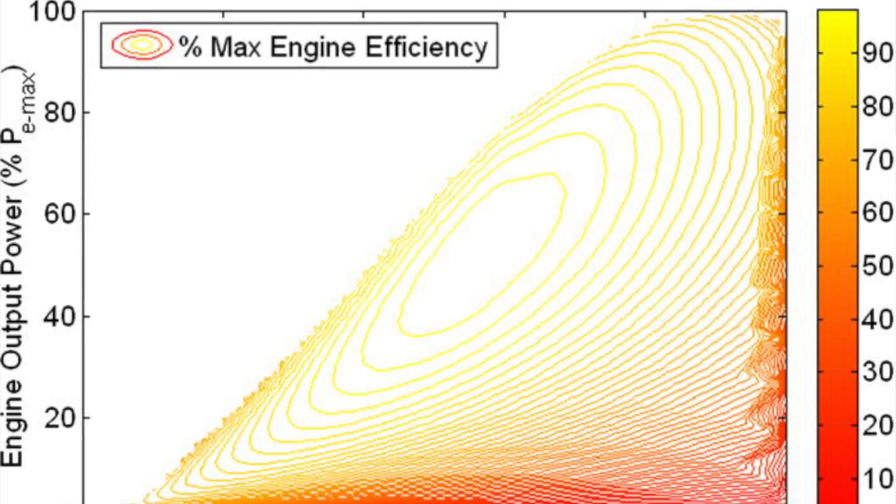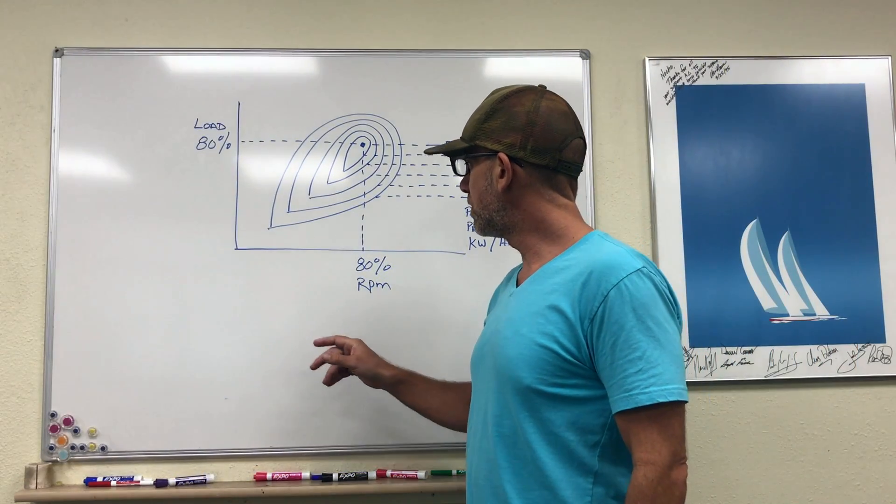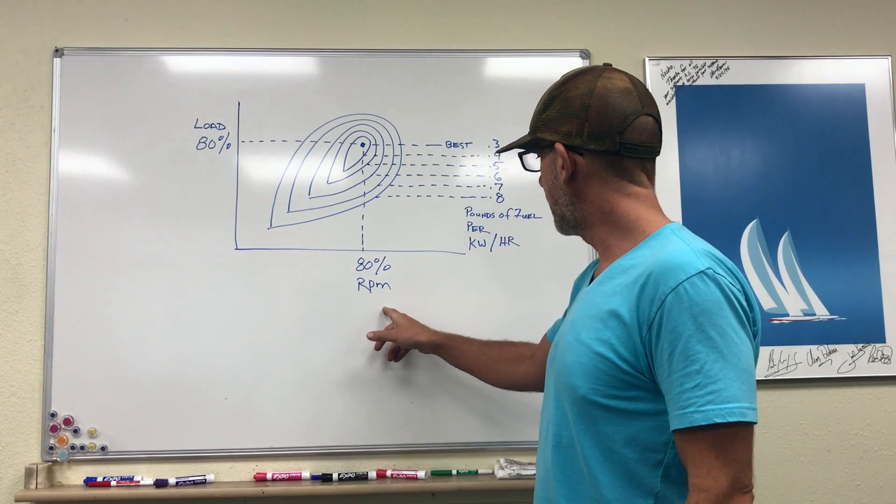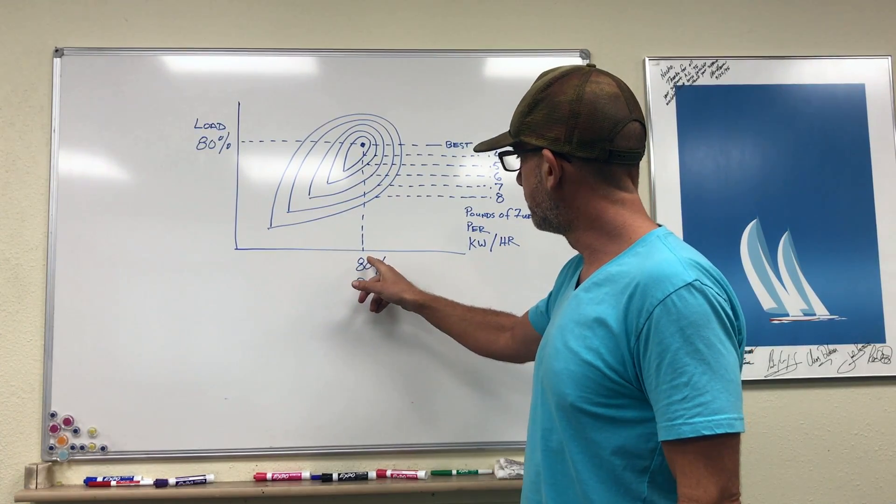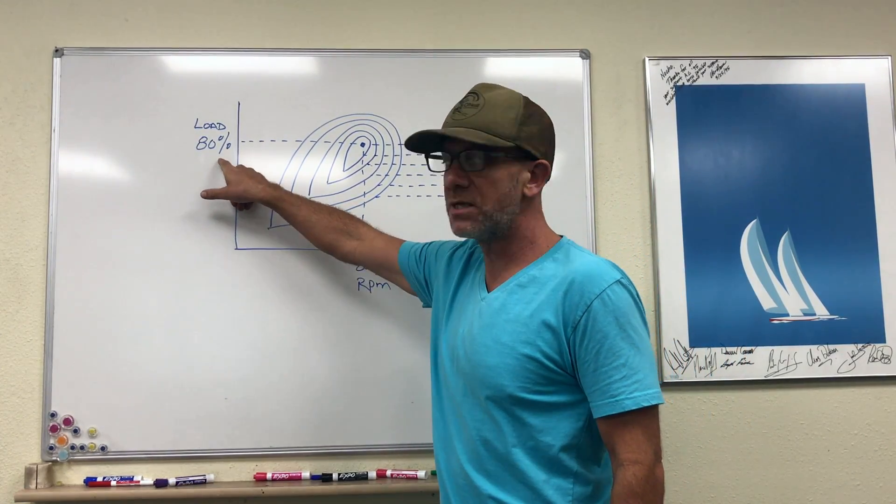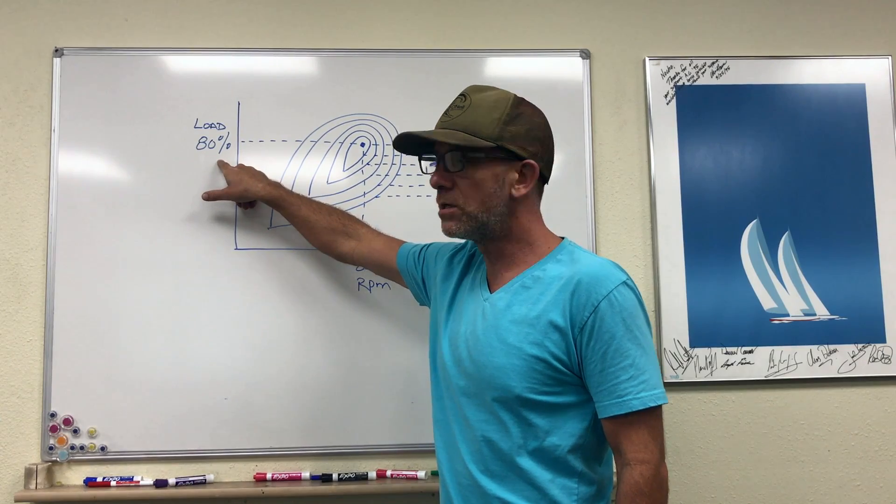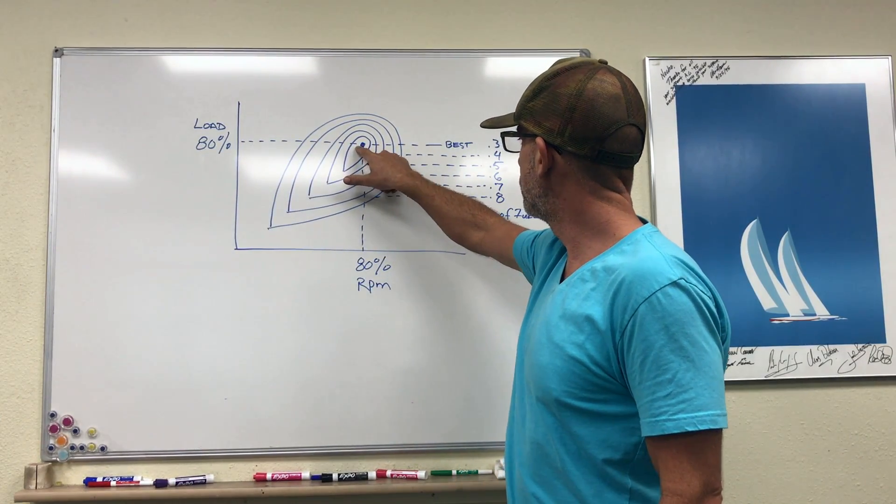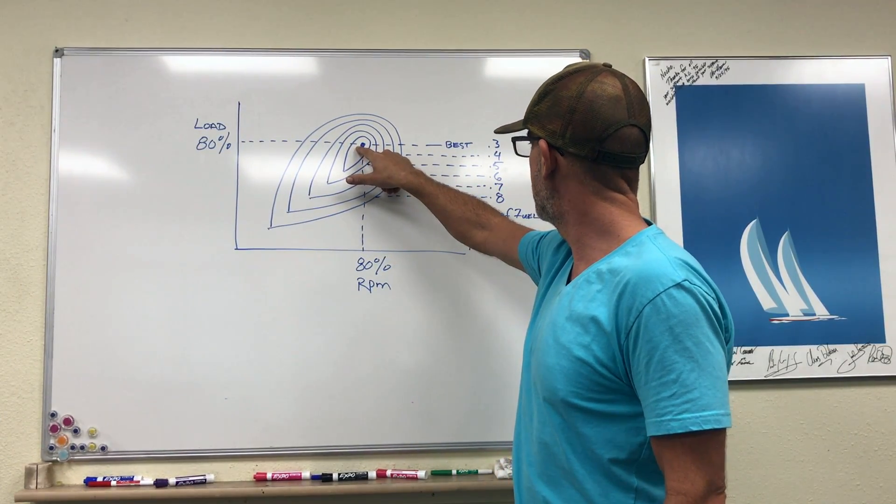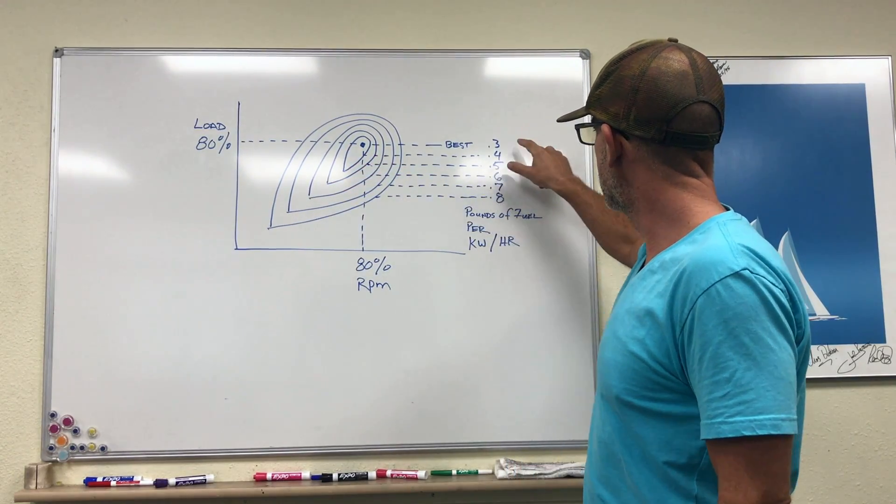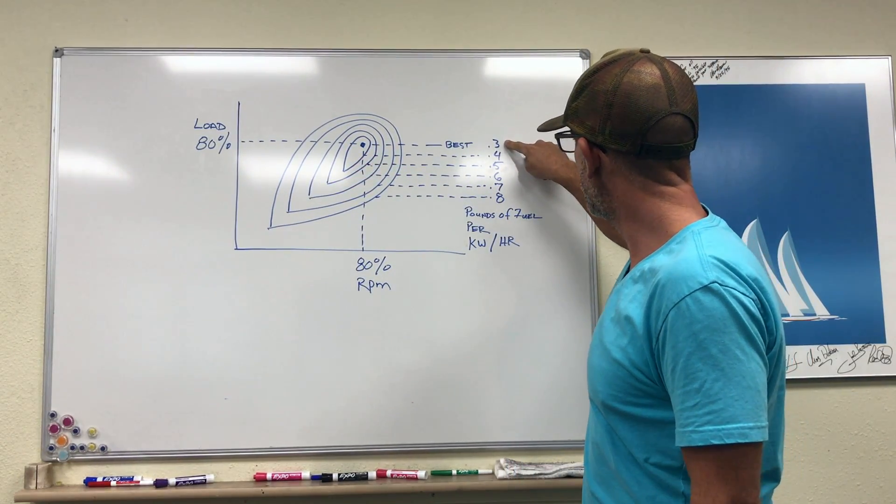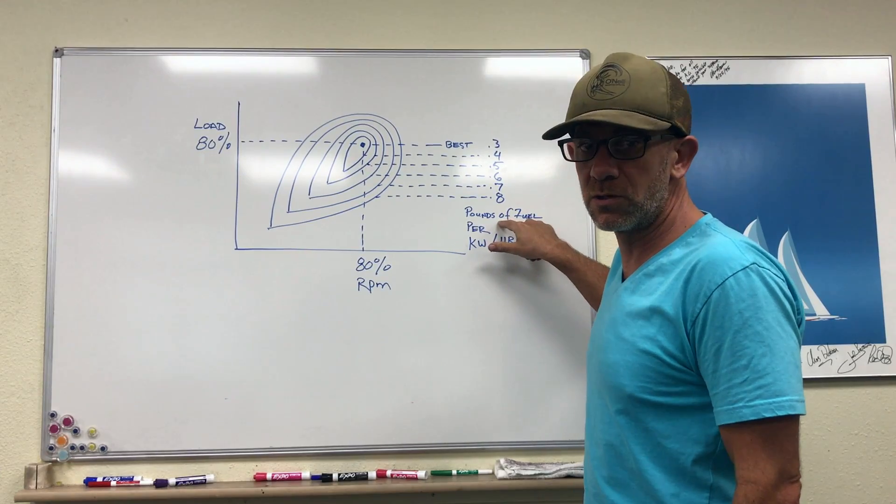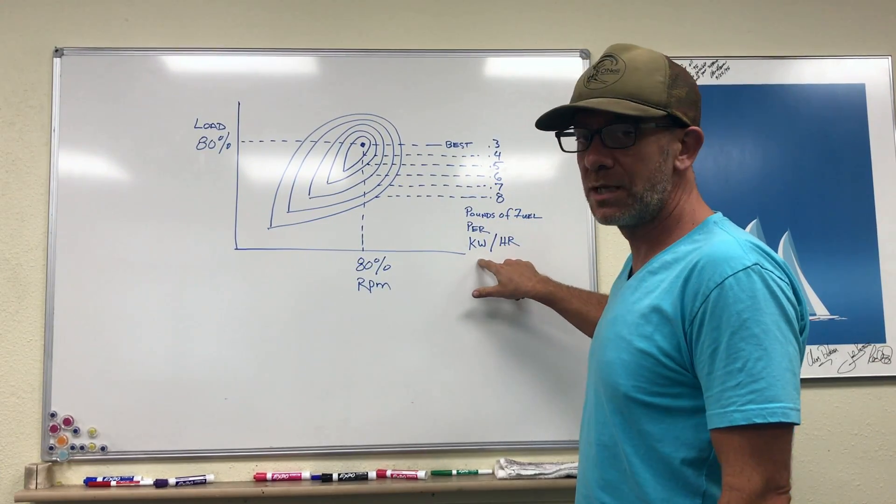So what this shows is that when the diesel engine is running at roughly 80% of its RPM and it has approximately an 80% load, that is going to achieve your very best efficiency. And in this case, this is 0.3 pounds of fuel per kilowatt hour.